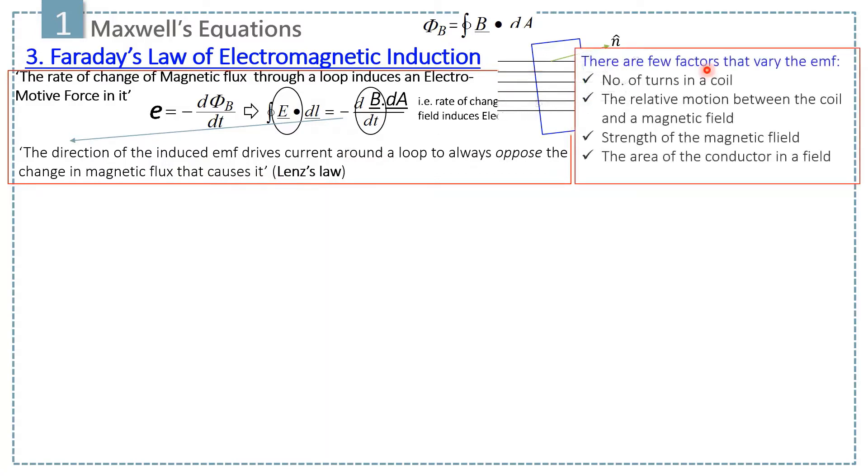There are few factors that affect the electromotive force. The first one is number of turns in a coil. It means more turns in the coil, greater current induced.